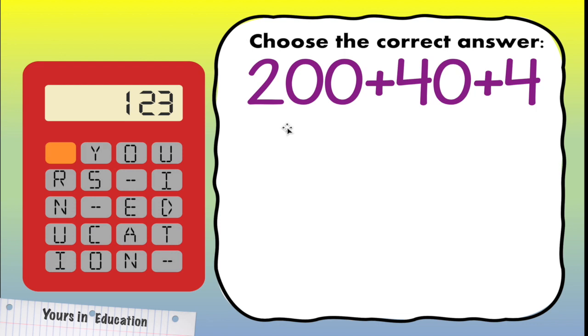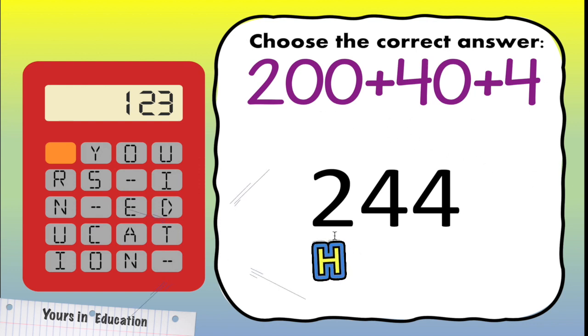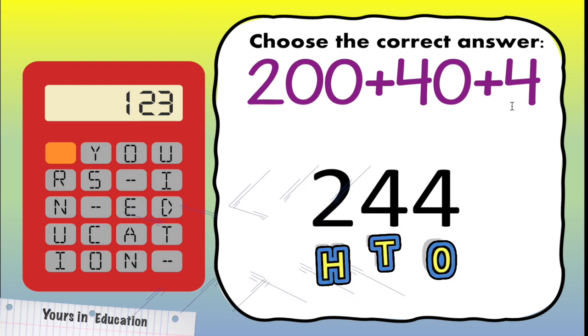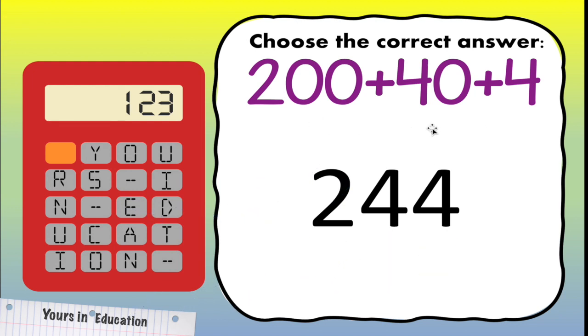Next, what would be the standard form of 200 plus 40 plus 4? Yay! It is 244. The 2 is in the hundreds place, this is 200 plus 4, but this is equal to 40 because it is on the tens place, and this 4 is 4. 200 plus 40 plus 4 is 244.